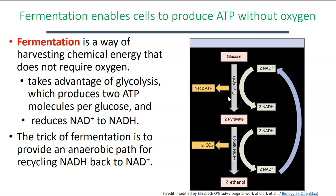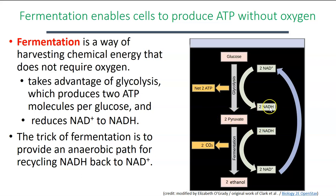In this lab, we're going to use yeast as our model organism to study fermentation. Normally, if yeast have oxygen present, they will do glycolysis, followed by the citric acid cycle and then oxidative phosphorylation. But we can put them in an environment where we deprive them of oxygen, forcing them to only do glycolysis followed by fermentation. When we give yeast a sugar source like glucose, they yield two molecules of ATP, make pyruvate, and make the high energy electron carrier NADH.